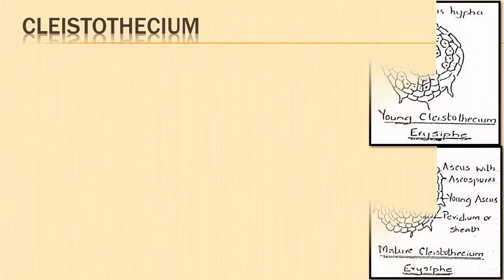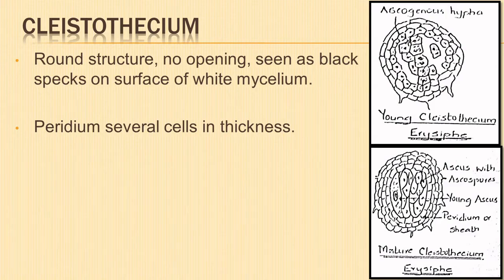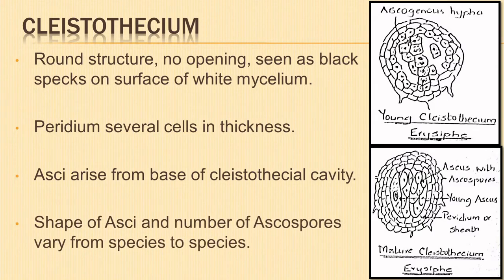Next is the cleistothecium type of ascocarp. Cleistothecia are round structures without an opening and are seen as black specks on the surface of white mycelium. The peridium or sheath around the cleistothecium is several cells in thickness. Certain cells of the peridium develop into long unbranched hyphae. All the asci arise from the base of the cleistothecial cavity, and the shape of asci and the number of ascospores vary from species to species.